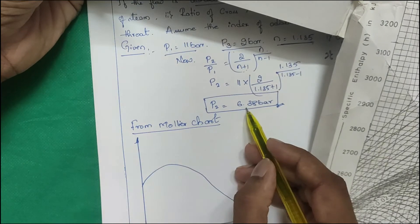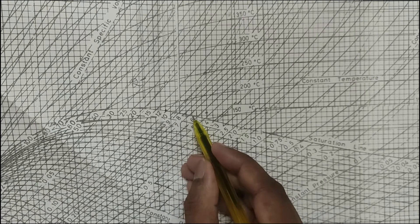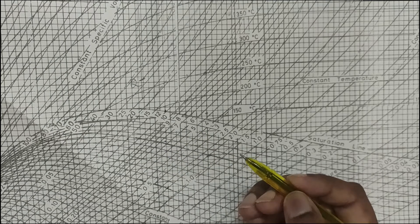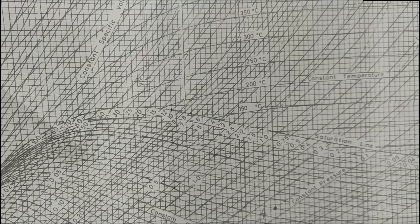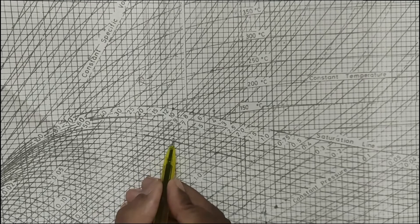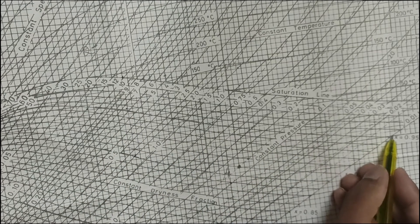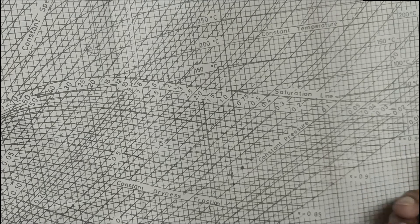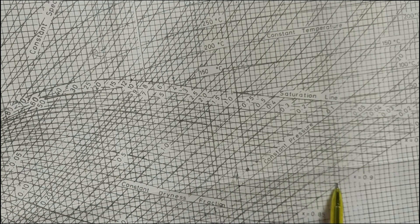The intermediate pressure is 6.38 bar, which falls between 5 and 6 on the chart. Place it and draw a horizontal line to find enthalpy. Since the process is within the saturation line, find two things: dryness fraction and specific volume. For point 2, draw along the line to get dryness fraction x2 ≈ 0.9955. From 2 bar, draw a straight line to get x3 ≈ 0.88.